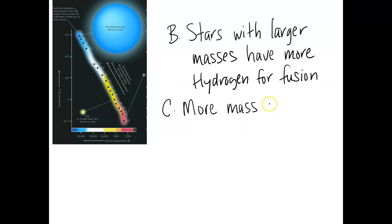If you have more mass, you have more hydrogen, right? But you also have stronger gravity. More mass causes stronger gravity. Gravity is related to how much stuff you have—more stuff, more gravity.